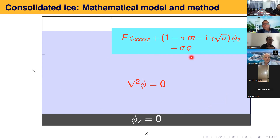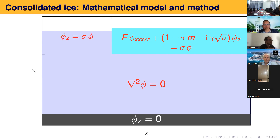The one part I want to highlight is the term with the imaginary unit in front of it — this is the viscous part. I've made the choice to use the Robinson Palmer damping model. There are lots of different options for your damping model; I've gone for the Robinson Palmer because it's about the only model that gives the correct power law attenuation. If you drop the ice terms, you get back to the standard free surface condition, which holds in the open water on the left hand side.